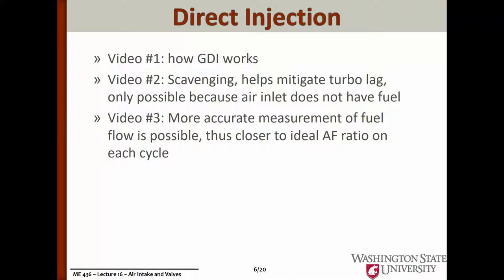The first video details how modern gasoline direct injection works, and the second focuses on how scavenging of the exhaust helps mitigate turbo lag — only possible with gasoline direct injection because you couldn't do the scavenging as well if you weren't injecting directly into the cylinder, as the air-to-fuel ratio would get all out of whack. The more accurately we can measure fuel flow, the closer to the ideal air-to-fuel ratio we can get on every single cycle. This move from a carbureted engine to eventually gasoline direct injection is all about having more consistent, even combustion every time, so we can control pollutants and increase engine response speed.